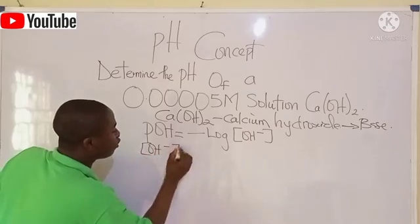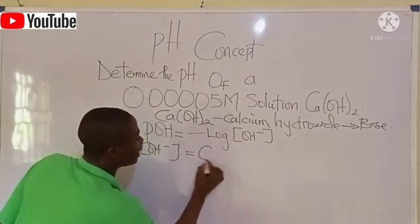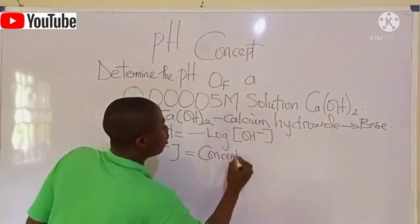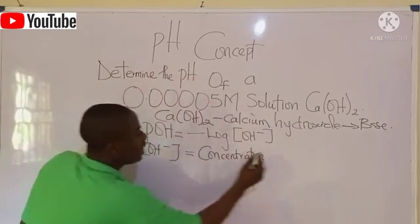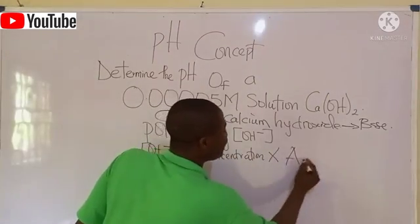To get your hydroxide ion concentration, we simply say concentration, which is the concentration of the full compound, times acidity.